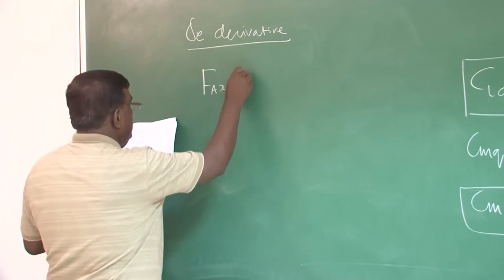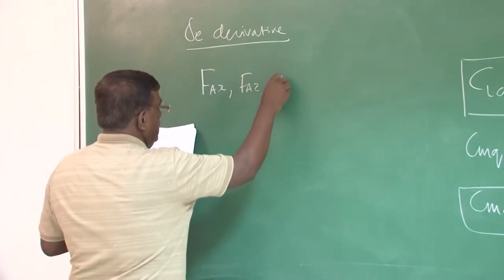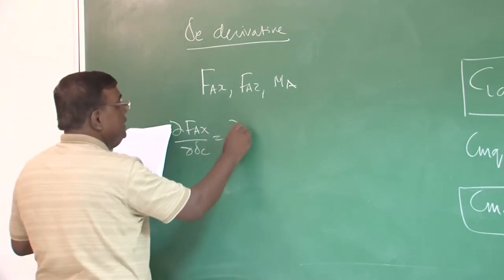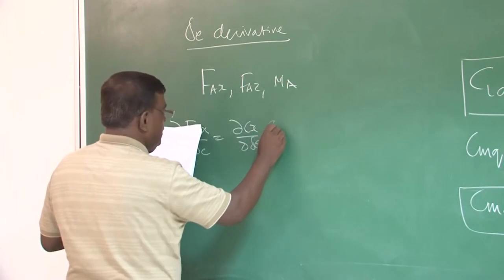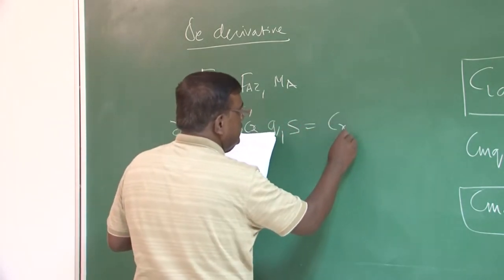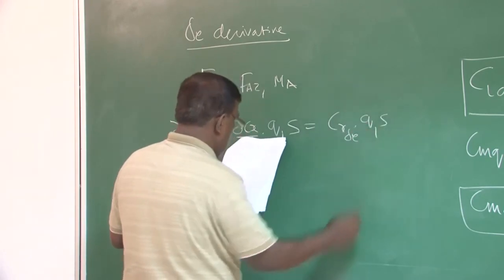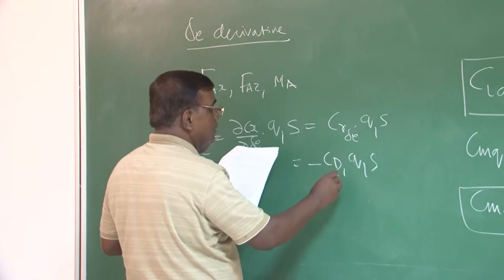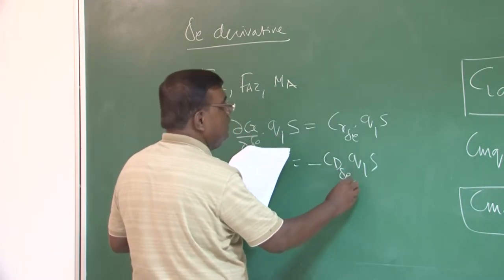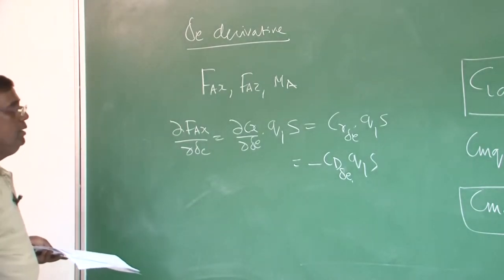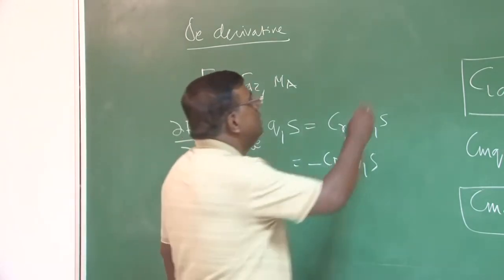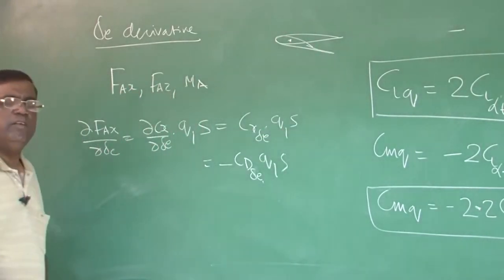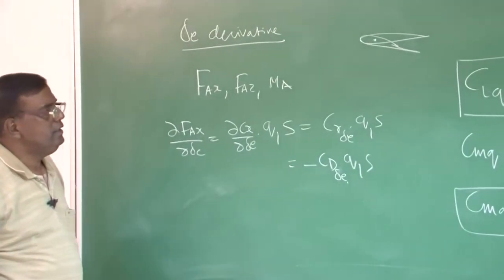Again, we start with the longitudinal, we are talking about FAX, FAZ and MA. I will go very straight. DFAX by D delta E, I will write as DCX by D delta E into Q1 S, which I can write as CX delta E into Q1 S, which is nothing but minus CD1 Q1 S, because minus CD minus CD delta E evaluated at steady state Q1 S. What is the physical meaning of CD delta E? See, whenever you deflect the elevator, right. Definitely, definitely there is going to be change in lift as well as drag and that is CD delta E is reflecting.